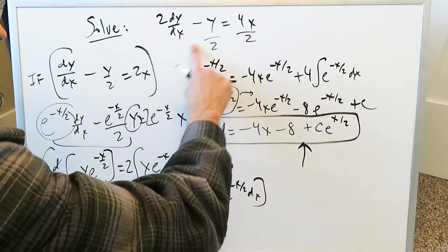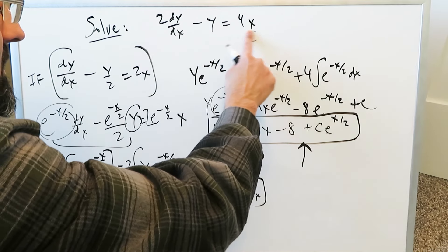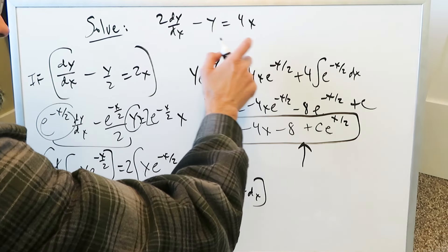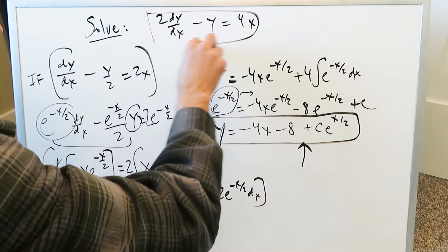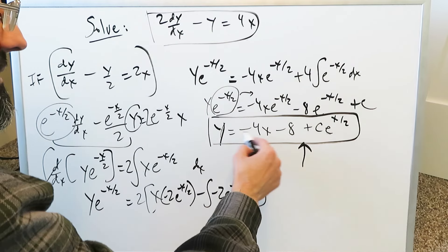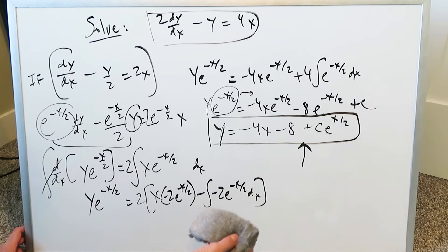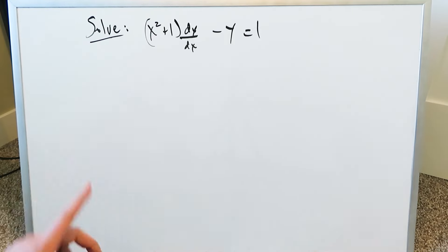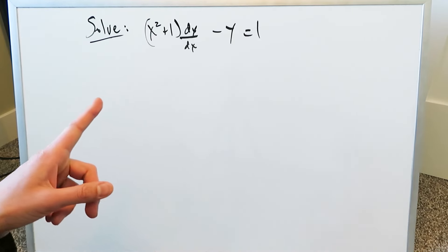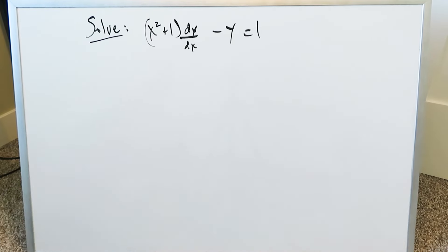That function represents the answer for which this differential equation is true. Now we have one more question, which will be a little tricky but interesting. Our last question is: x squared plus 1 times dy/dx minus y equals 1.